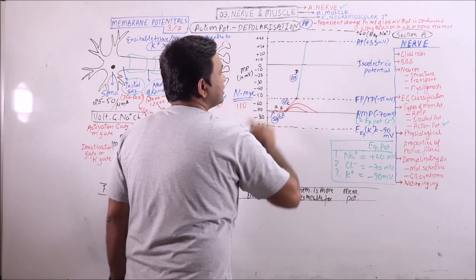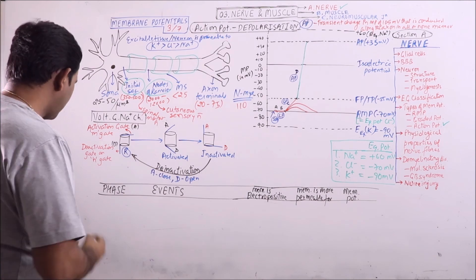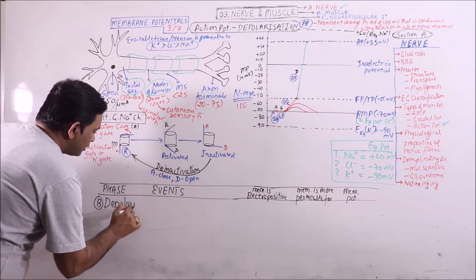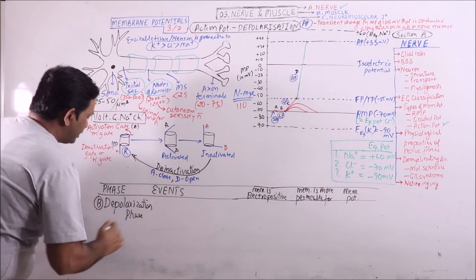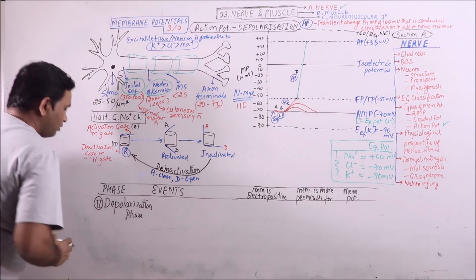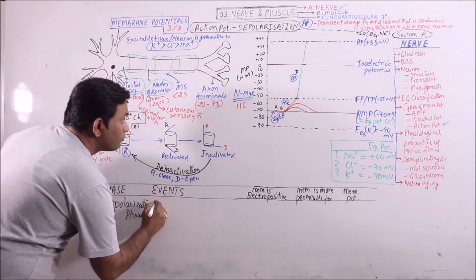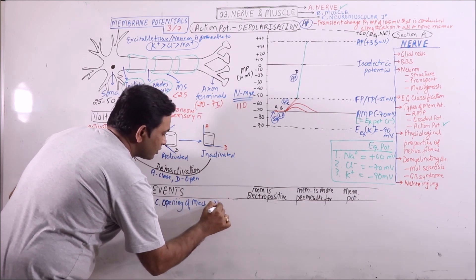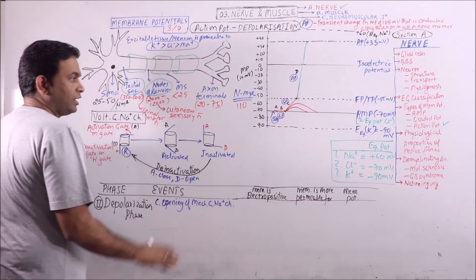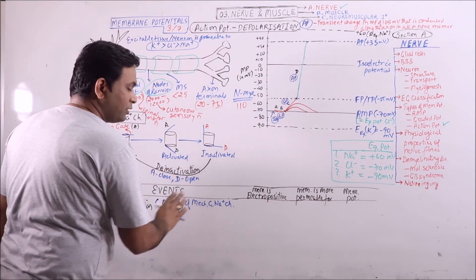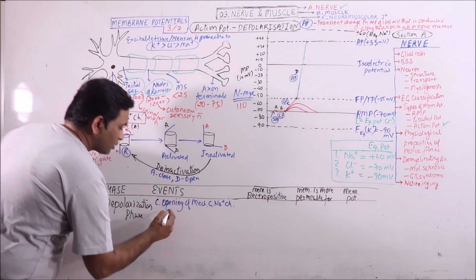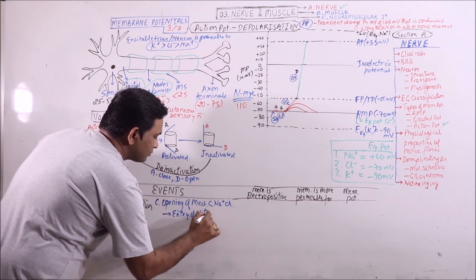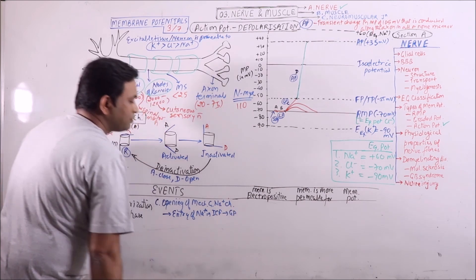This phase is known as the depolarization phase. In the depolarization phase, we will observe two major events. C means opening of mechanically gated sodium channels — or if it is a post-synaptic neuron, these channels will be voltage-gated sodium channels. Finally, opening of mechanically gated sodium channels will result in entry of sodium into the ICF, which develops the graded potential.